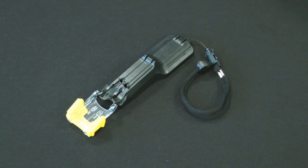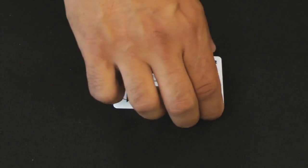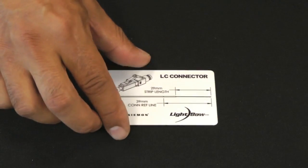An included lanyard can also be used on the tool. The strip template card has both an SC side and an LC side.